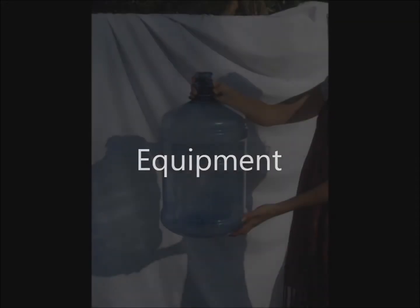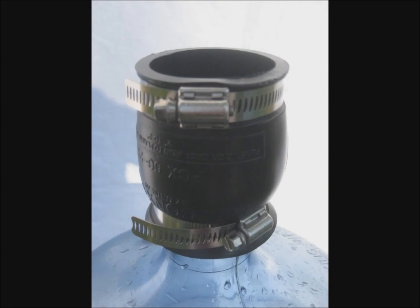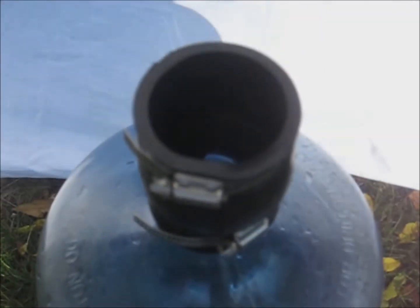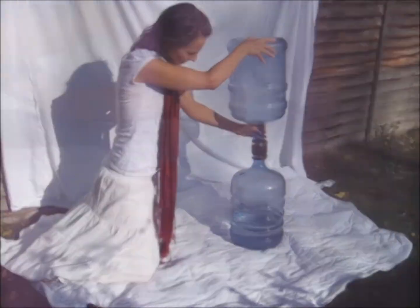To create these vortices, the water was made to flow between two 18-litre bottles. The bottles were connected using a rubber coupler and a 2-inch washer was used between the bottles in order to control the rate of water flow and thus the size of the vortex.